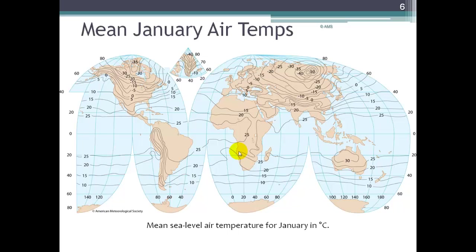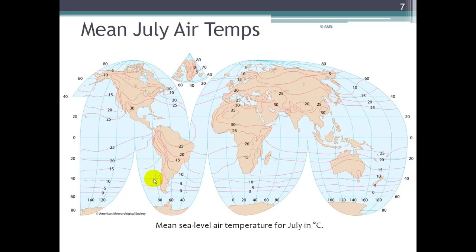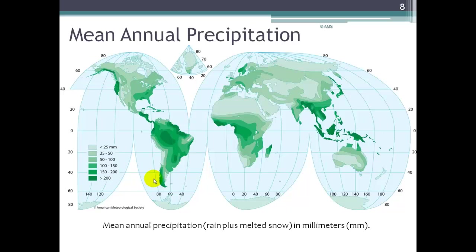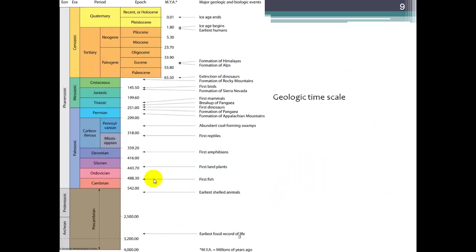It's important to have an understanding of how global patterns vary for different variables. Here we're looking at mean January air temperatures, and you can see the isotherms on the map show temperatures in degrees Celsius. They're pretty much stratified latitudinally, but there are some big jumps longitudinally over land masses. Here in South America, the Andes Mountains run down the western coast and affect the temperature regime. We also look at mean July air temperatures and mean annual precipitation amounts in millimeters.